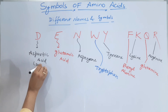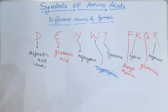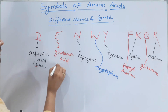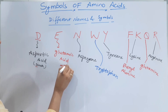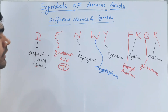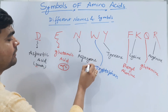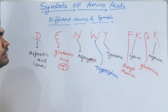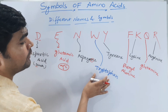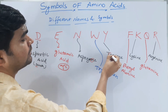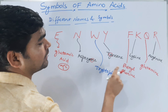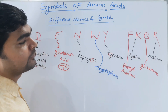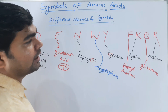Let's remember the reasoning: D for aspartic acid — think 'D for duck.' For glutamic acid, we pronounce it 'glutamic' and note the E in it. N is present in asparagine, so N for asparagine. Tryptophan uses W. Tyrosine has Y in it. Phenylalanine — we pronounce it with F for phenyl, not P. K for lysine, Q for glutamine, and R for arginine — R is present in arginine.